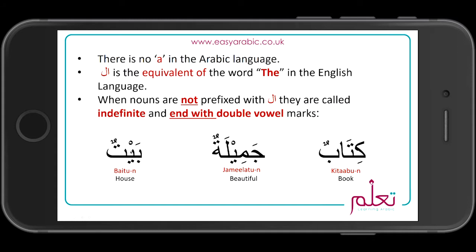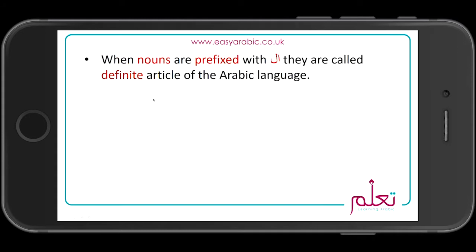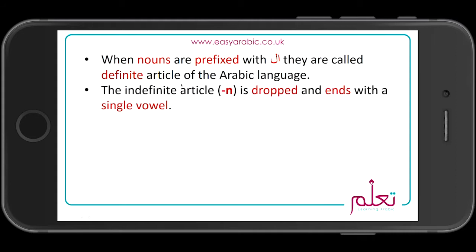For example: kitabun, jamilun, baytun. When prefixed with 'Al', they are called definite — now you're saying 'the book', 'the pen', 'the kitab'. When you prefix 'Al', the 'n' is dropped and the word ends with a single vowel.